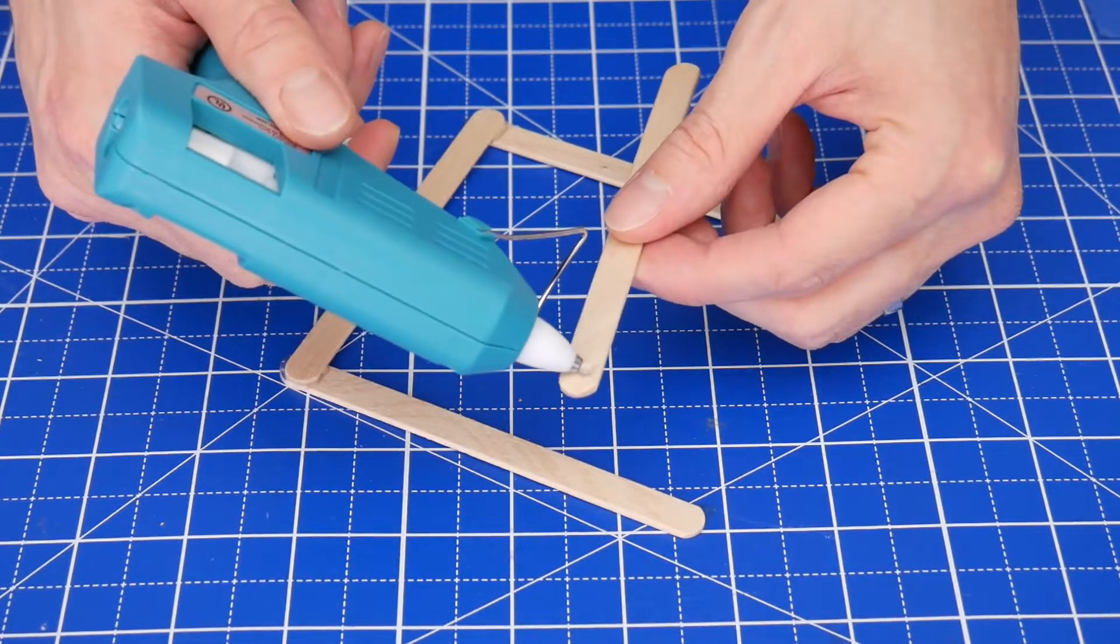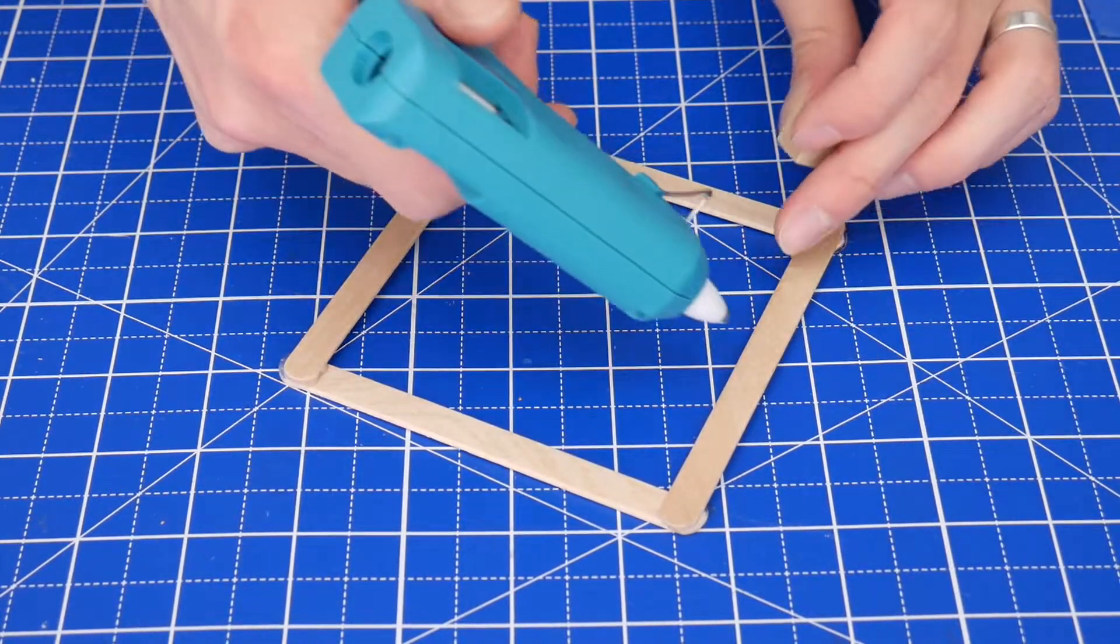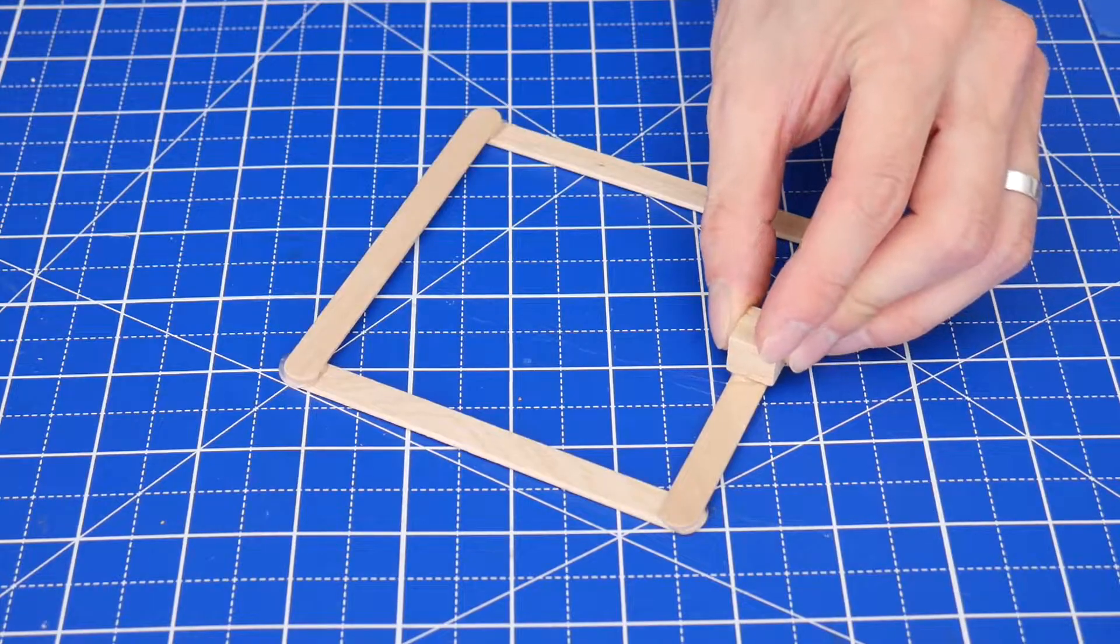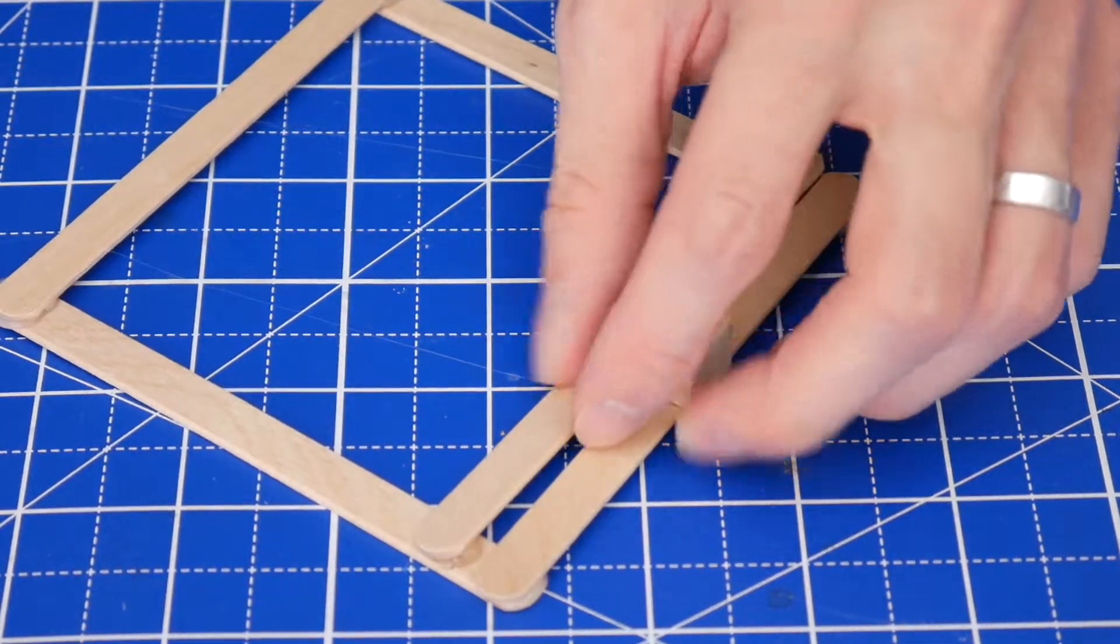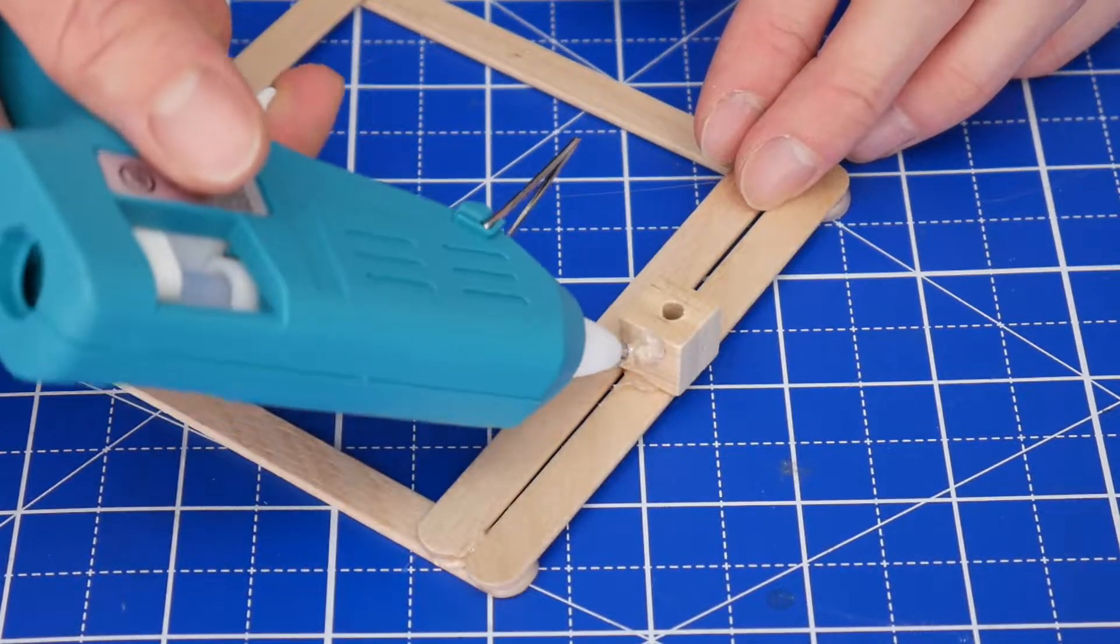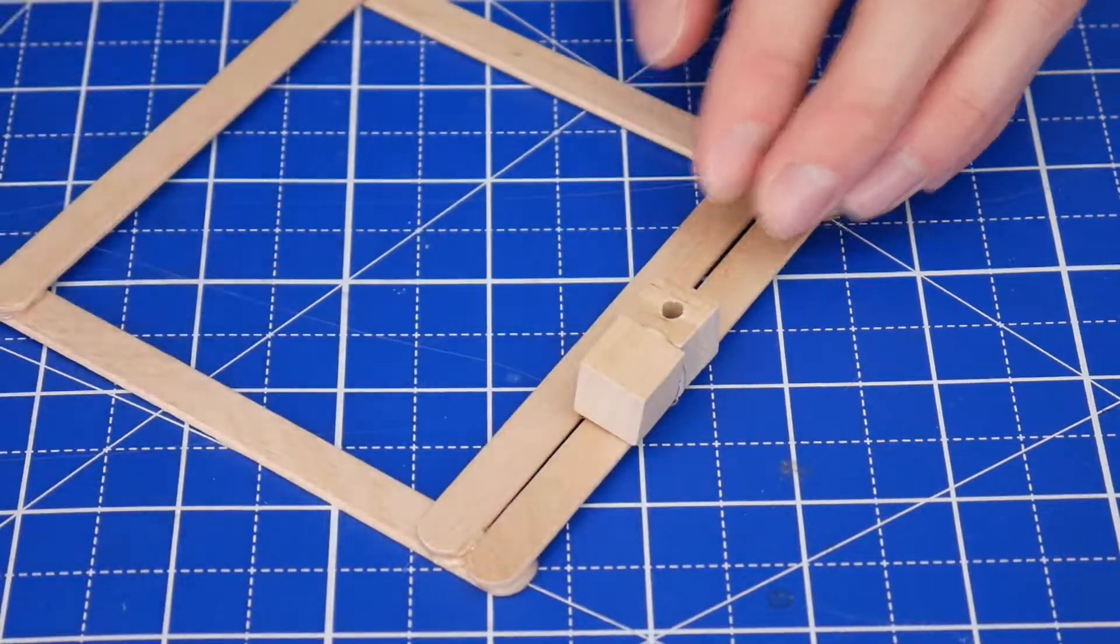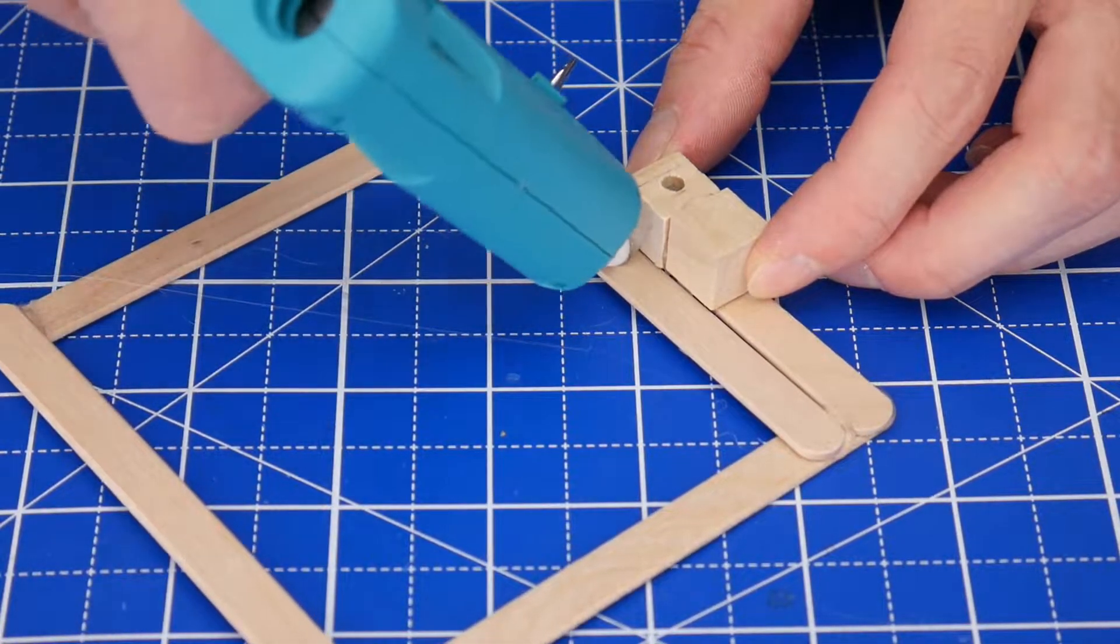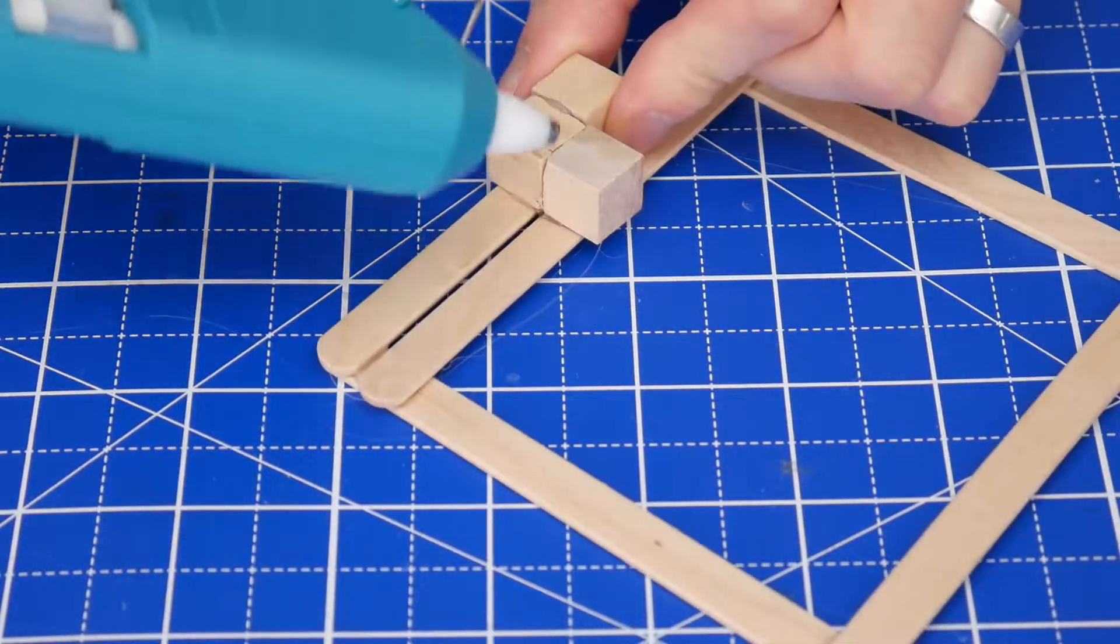Begin building the base by hot gluing four sticks into a square. Then glue a cube with holes onto the center of one of the sticks. Glue on another stick next to that cube. And then glue on three more regular cubes to the sides of the cube with holes in it. These supports are necessary because it will prevent the cube with holes from breaking off when the judo robot is in action.